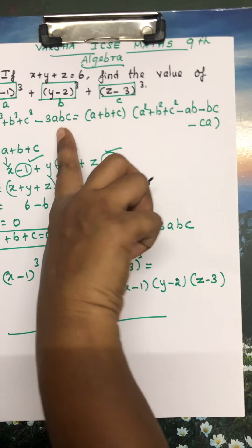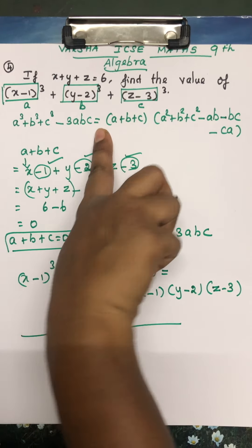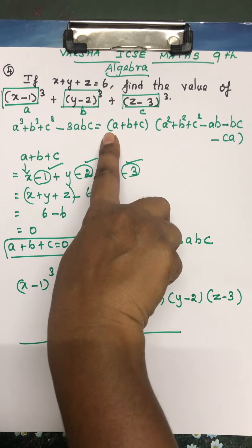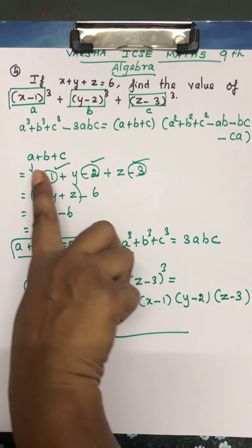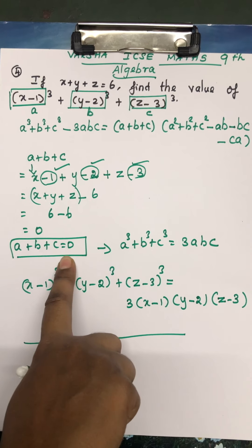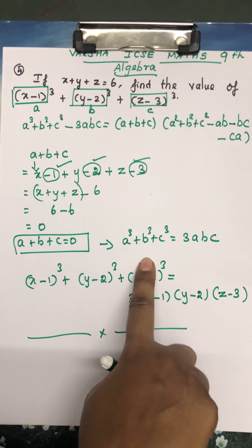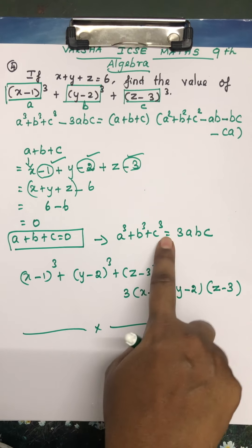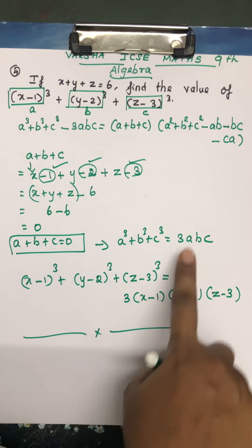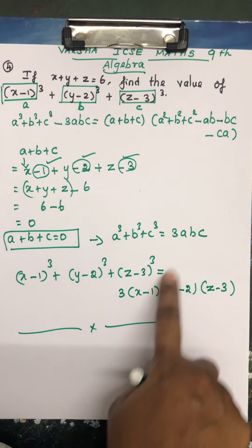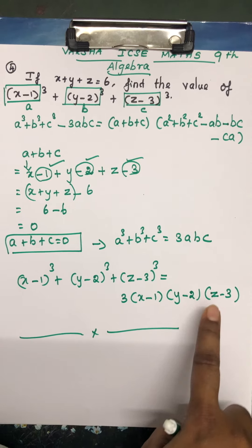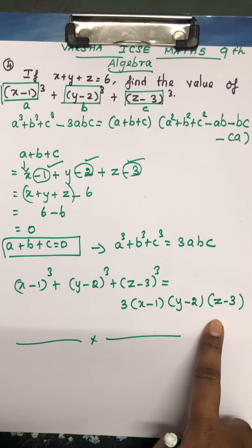So this is the right answer. Using the algebraic identity, we found a + b + c = 0, and whenever that is 0, a³ + b³ + c³ = 3abc. Finally, substituting a = (x−1), b = (y−2), c = (z−3), we get 3(x−1)(y−2)(z−3).